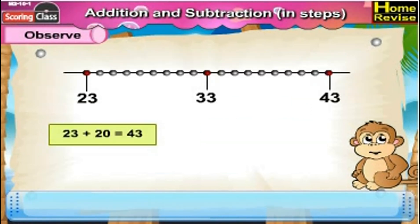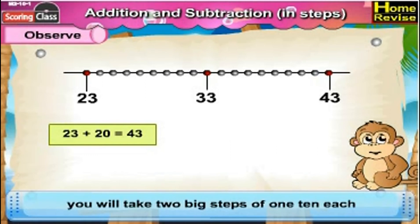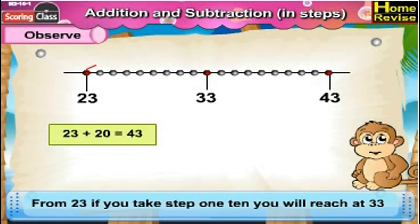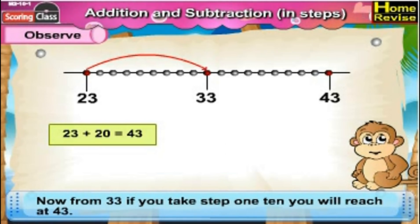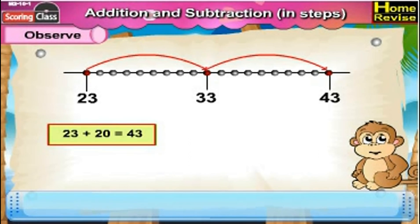23 plus 20 is 43. Once you are at 23, you will take two big steps of 10 each. From 23, if you take a step of 10 you reach 33. Now from 33, if you take another step of 10 you will reach 43. So 23 plus 20 is 43.